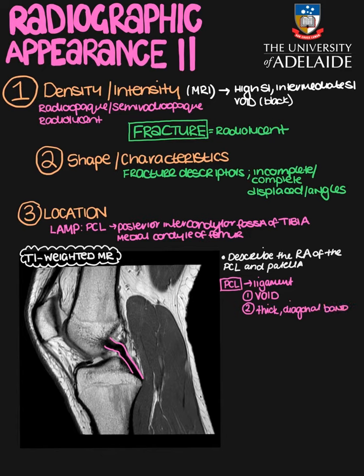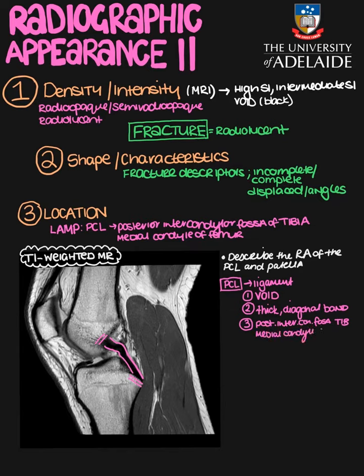The third thing is the location. Describing where the ligament sits in the scan, you would say it attaches to the posterior intercondylar fossa of the tibia, and going by the LAMP acronym, it attaches superiorly to the medial condyle of the femur. You need all three components — intensity, shape, and location — to get full marks for that question. If you only have two, you'll get half a mark.